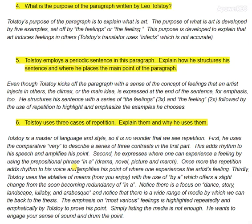Second, he expresses where one can experience a feeling by using the prepositional phrase 'in a' — notice: drama, novel, picture, and march. Once more, the repetition adds to the rhythm of his voice and amplifies his point of where one can experience the artist's feeling in multiple, varied ways. Thirdly, Tolstoy uses the ablative of means — how you enjoy — with the use of 'by a,' which offers a slight change from the soon-becoming redundancy of 'in a.'